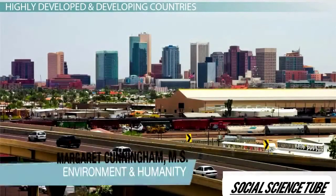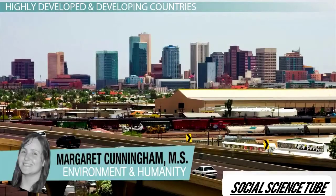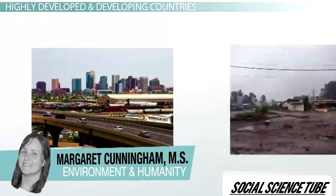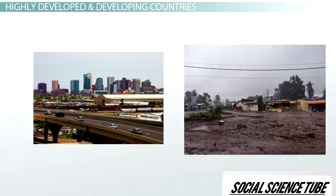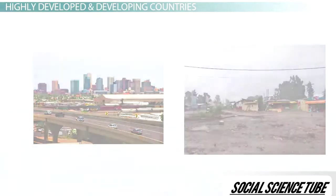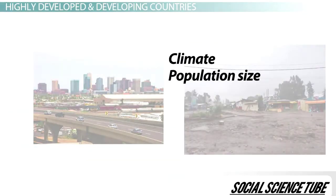Imagine a big city in the United States and a small village in Ethiopia. What are some differences between these two locations? Some differences might include climate, population size, culture, and diet.